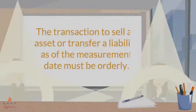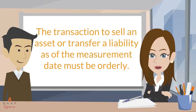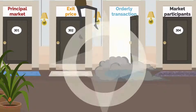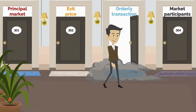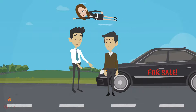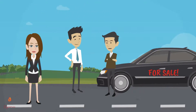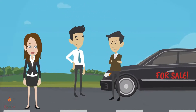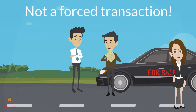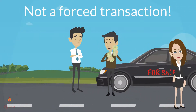The transaction to sell an asset or transfer a liability as of the measurement date must be orderly. This means that there must have been exposure to the market for a period before the measurement date to allow for marketing activities that are usual and customary for transactions involving such assets or liabilities, and that the transaction is not a forced transaction.